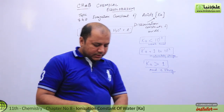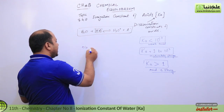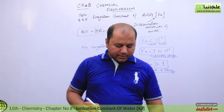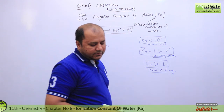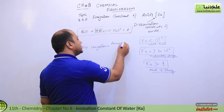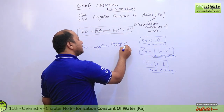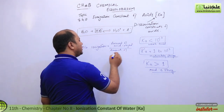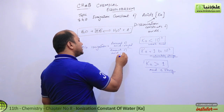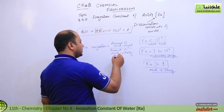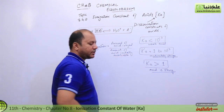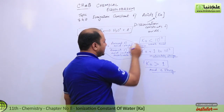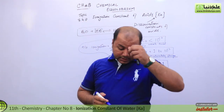Let me talk about percentage of ionization. If you want to find the percentage of ionization, the formula is: amount of acid ionized over the amount of acid initially available, multiplied by 100. So that's the formula which lets you calculate the ionization constant and percentage ionization.